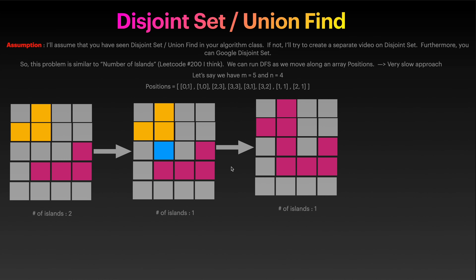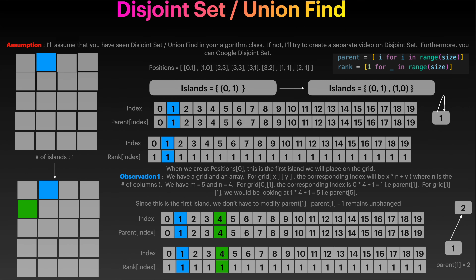To solve this problem we have to keep track of how many islands we have so far. You could technically use DFS at every single iteration, but I think you will get time limit exceeded - that approach will be very, very slow. So this is a problem where union find will really shine and show its true potential.